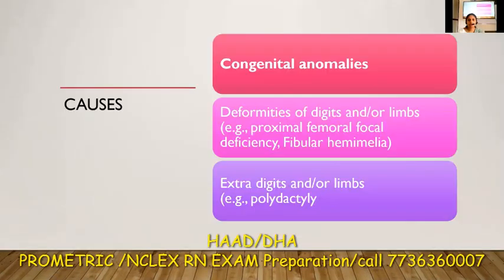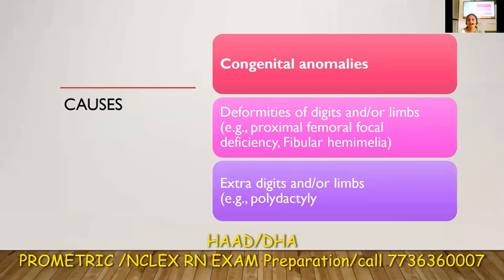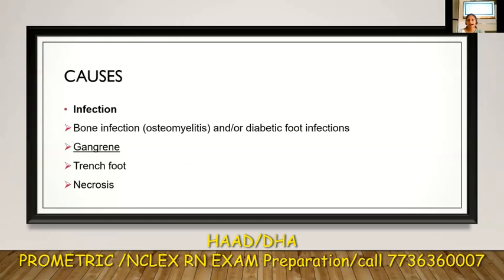What are the indications of amputation? First of all, trauma — because of trauma we could remove the part of the body. And as a management of cancer, we also usually do amputation. Congenital abnormalities like deformities of digits or limbs and extra digits — that is polydactyly — are also indications. Additionally, certain infections or bone infections, for example osteomyelitis, gangrene, trench foot, and necrosis are indications for amputation.